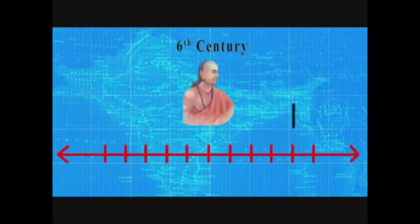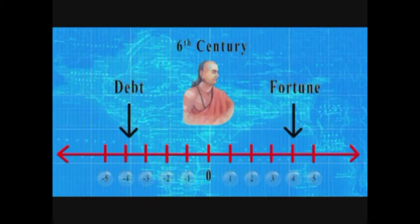Brahmagupta called positive numbers fortunes and negative numbers debts, and came up with a whole series of rules.